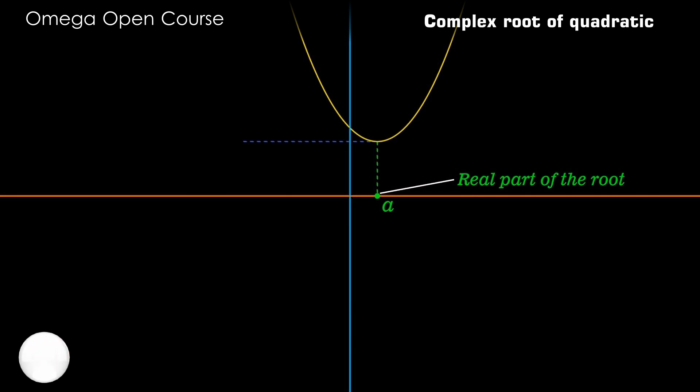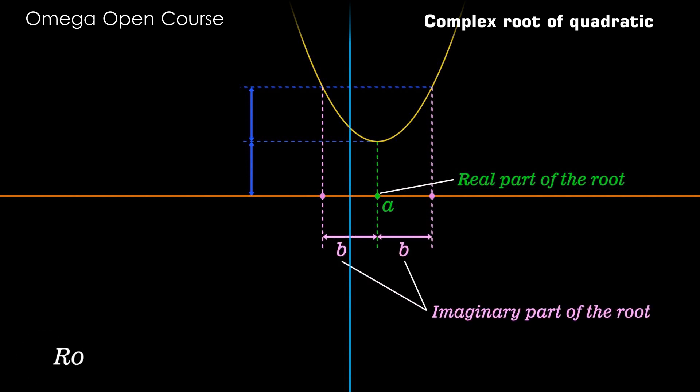Now draw a horizontal line at height twice the height of the vertex from the x-axis. Draw vertical lines from these points of intersection to intersect the x-axis. The distance of these points from the real part of the root gives you the imaginary part of the root.